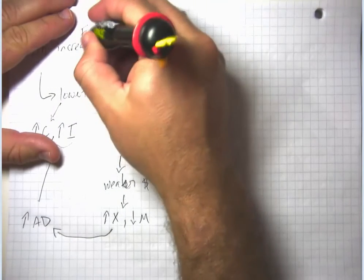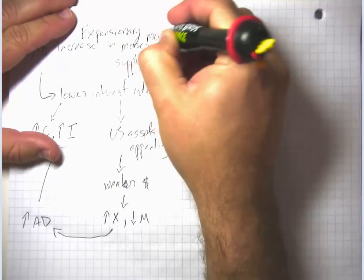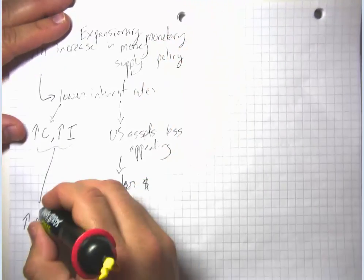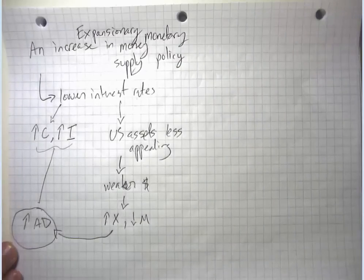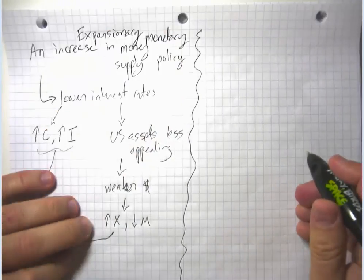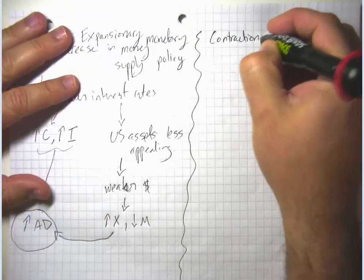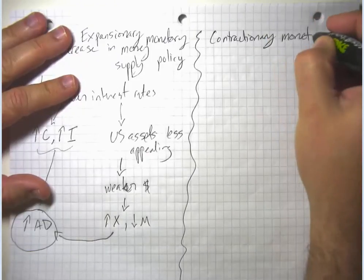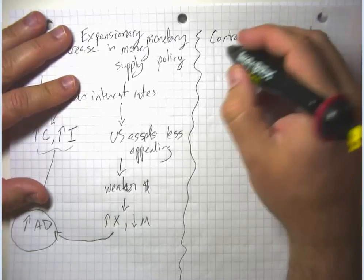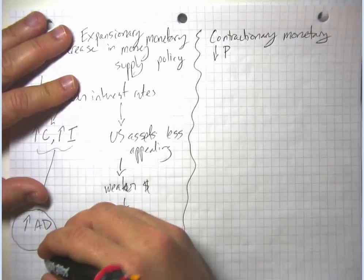So this is what happens if we have what's called an expansionary monetary policy. So an expansionary monetary policy has as its objective increasing aggregate demand. And that's typically what we would want to do if we wanted to try and get out of a recession. We could also run a contractionary monetary policy where basically everything is going to go in reverse. A contractionary monetary policy has as its objective decreasing inflation whereas this one had as its objective increasing GDP.